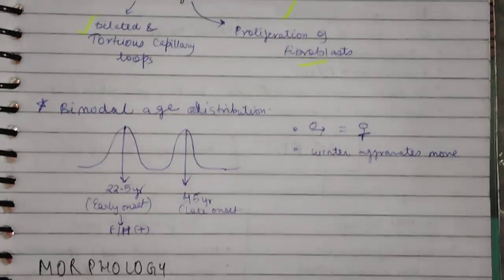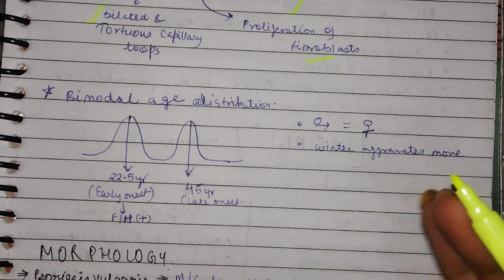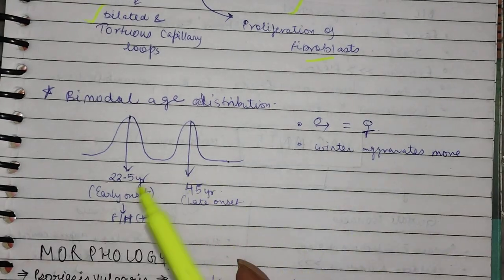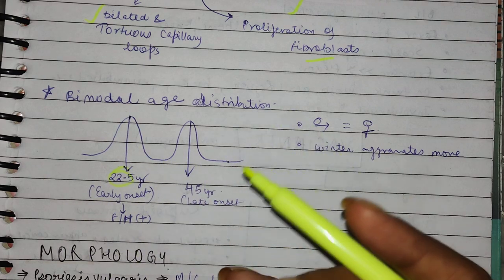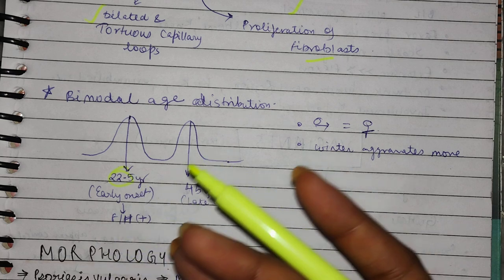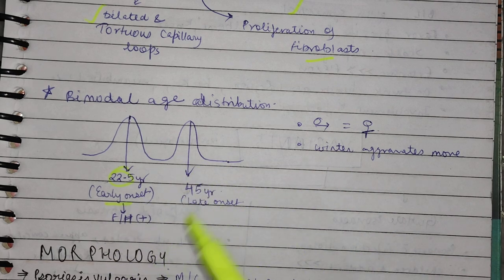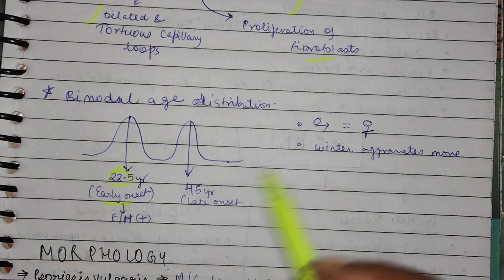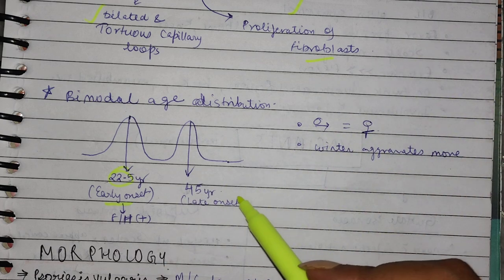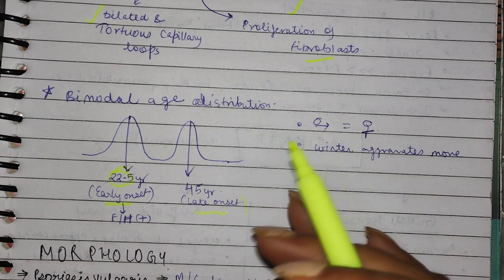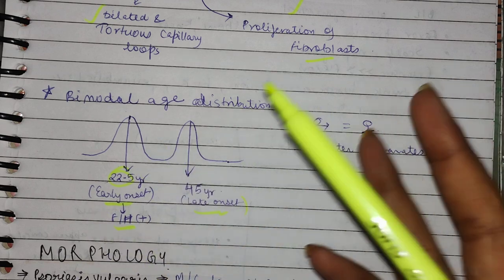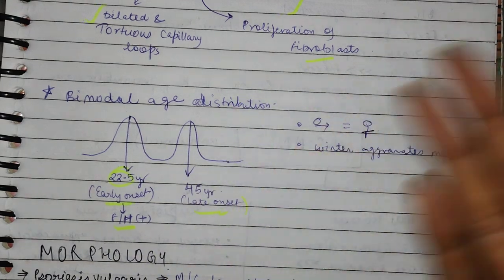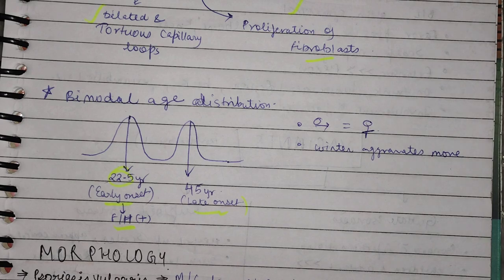About the bimodal age distribution: two age groups will be affected. If around age 22 to 22.5 on average, it is called early onset psoriasis. And in 45 years, if psoriasis develops, it is called late onset. Early onset generally has a family history of psoriasis and predisposing factors present.